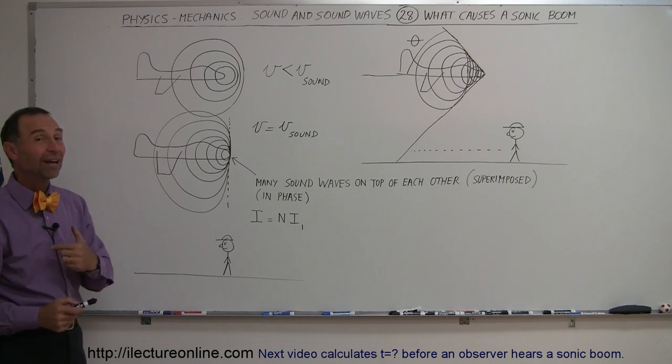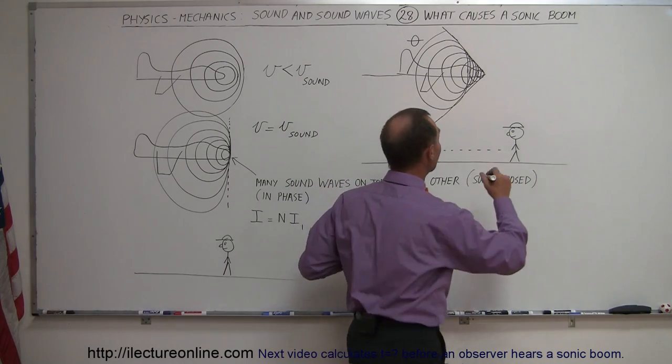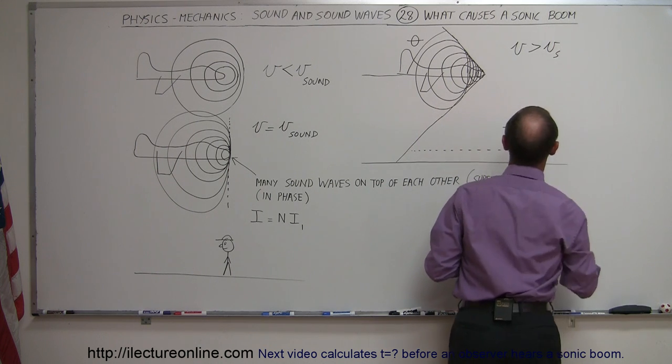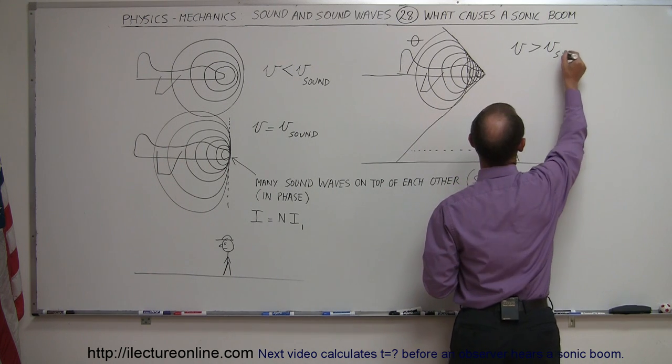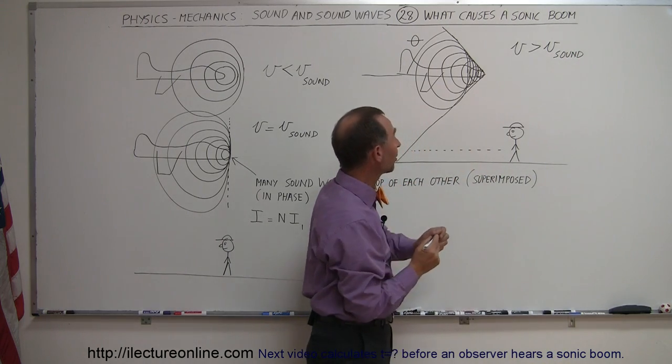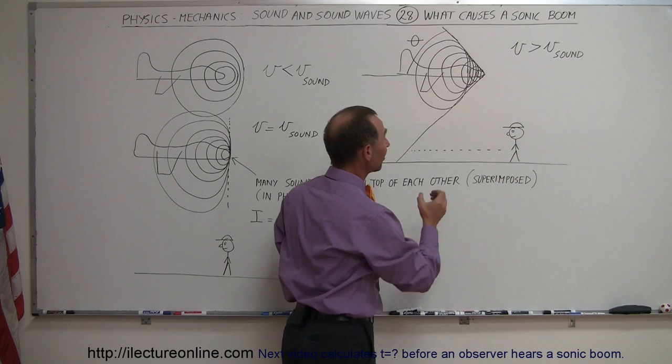What happens when the airplane begins to fly faster than the speed of sound? Like in this case, v is greater than the velocity of sound. And of course I should write sound, just to make sure that we understand what we're talking about. So here's the velocity of the plane, which is now faster than the speed of sound.